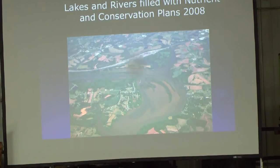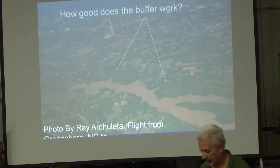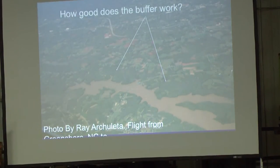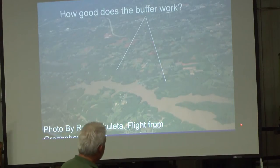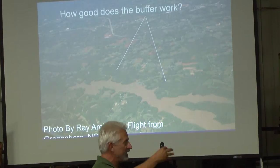Look at this lake near my house — why does it look like chocolate cake? Stream bank erosion. Now look at that beautiful buffer strip — I love it. But we need that space. We need to give nature space.